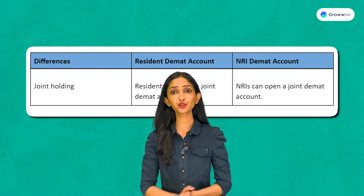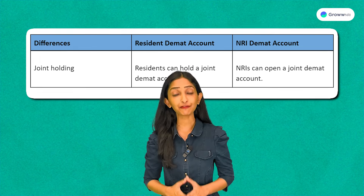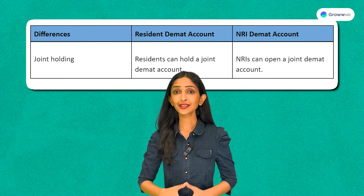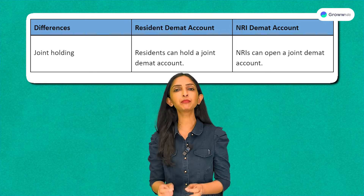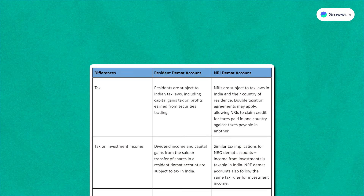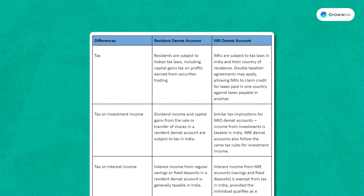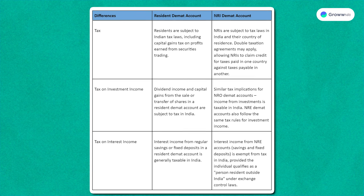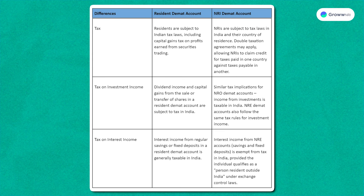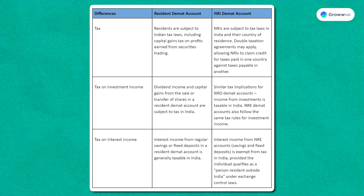Regarding joint holding — for a resident DMAT account, residents have the option to hold a joint account. NRIs can also open a joint DMAT account, but both account holders must complete their KYC registration and submit the required documents. On taxes: for resident DMAT accounts, residents follow Indian tax laws including capital gains tax. For NRI DMAT accounts, NRIs follow tax laws in both India and their resident country, with double taxation agreements possibly offering some relief. Both NRO and NRE DMAT accounts follow similar tax rules for investment income; however, NRE accounts provide tax exemption on interest income if the individual qualifies as a person resident outside India under exchange control laws.